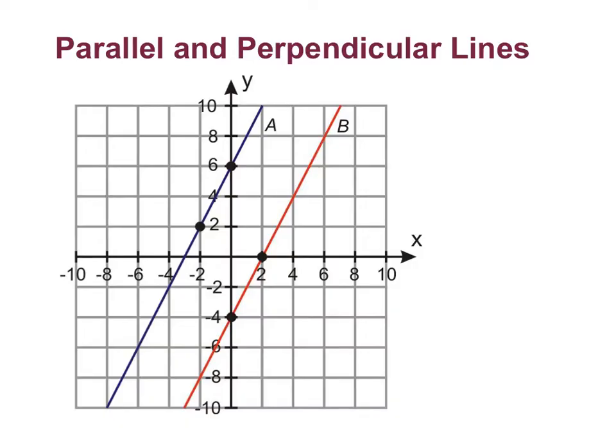Let's recall that parallel lines are two lines that are the same distance apart and they never meet. So for two lines to be the same distance apart and never meet, their slope needs to be the same, or they have to have equal slopes.